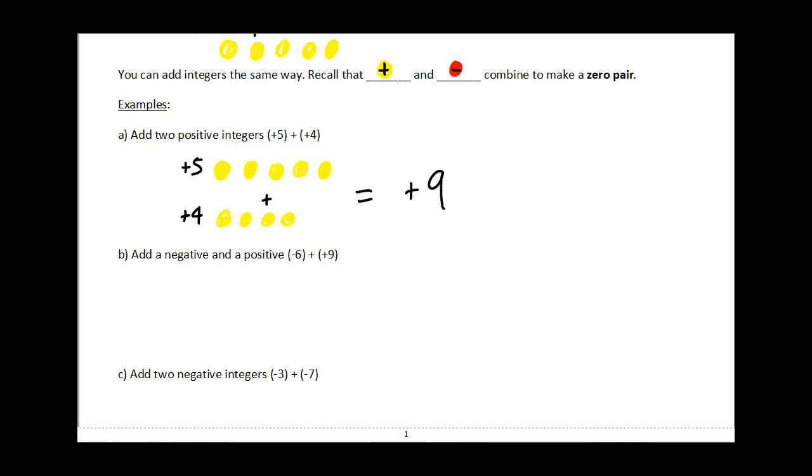But what if I have some negatives? For example, we're going to add negative six and positive nine. So negative six would be six of these little negative red dots. One, two, three, four, five, six.